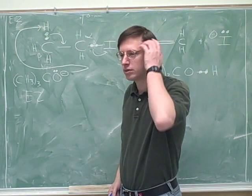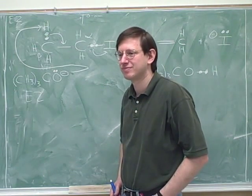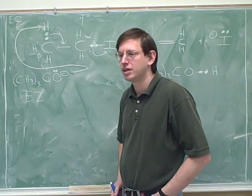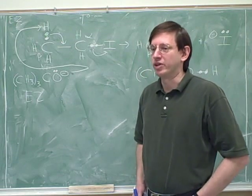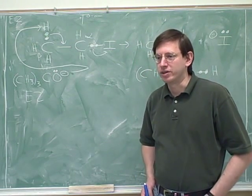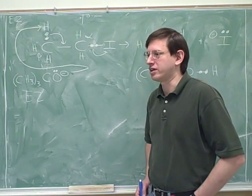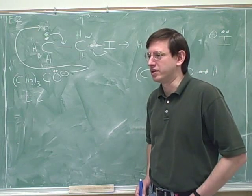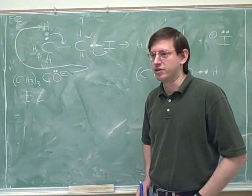It's the same for SN2, right? E2 and SN2 regarding rate determination are the same, and then SN1 and E1 are the same. SN2 and E2 are very similar, and SN1 and E1 are even more similar. Now, we know that SN2 and E2 are not identical because steric hindrance is a big obstacle to SN2 and not a big obstacle to E2, but they're still very similar in other ways.